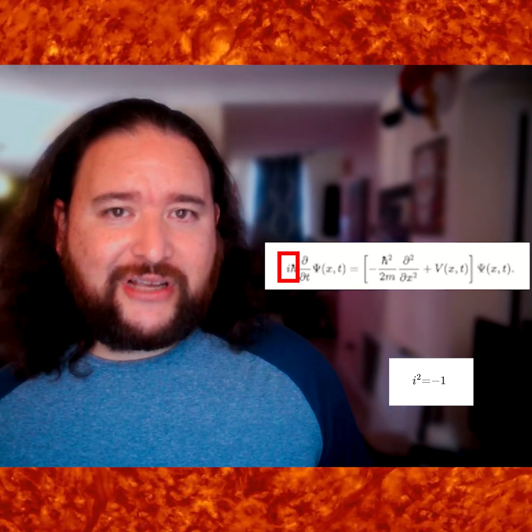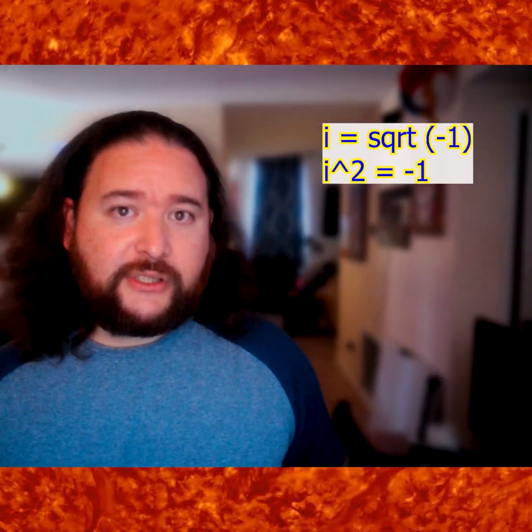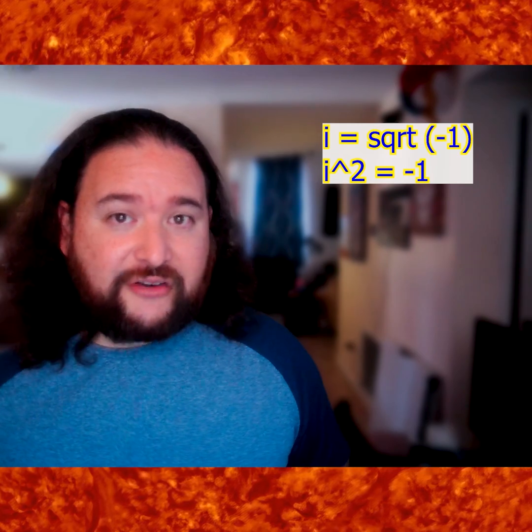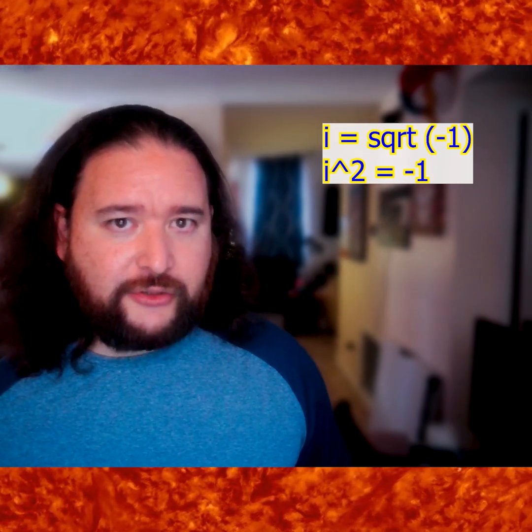An interesting thing to note is the usage of i, which is the square root of negative one, or an imaginary number. This is used to represent the phase and angle of a wave function. If it's squared, it becomes negative one, basically changing your entire value to a negative, and this can be useful for some of the math done in quantum.